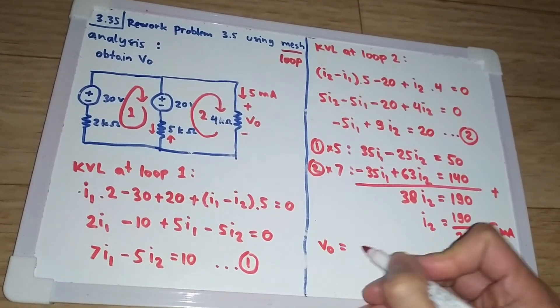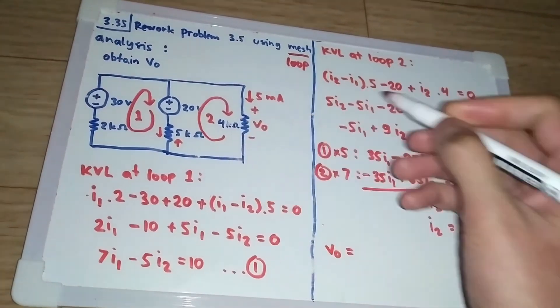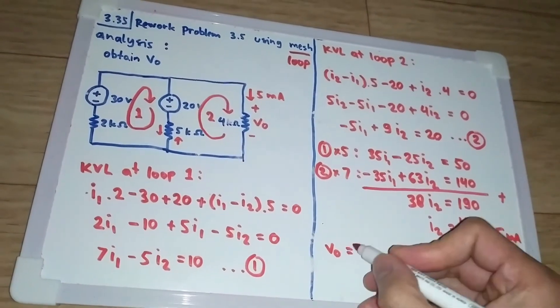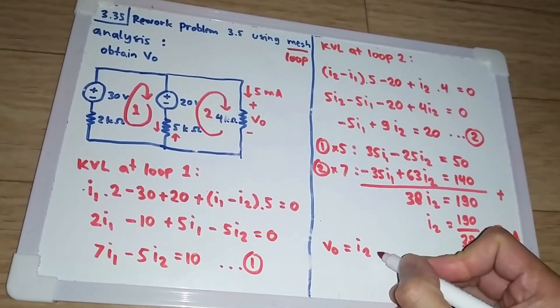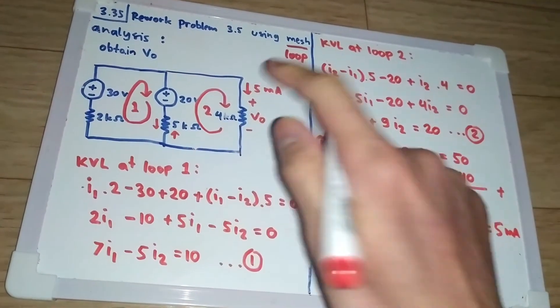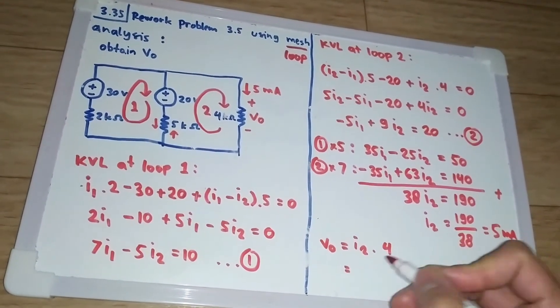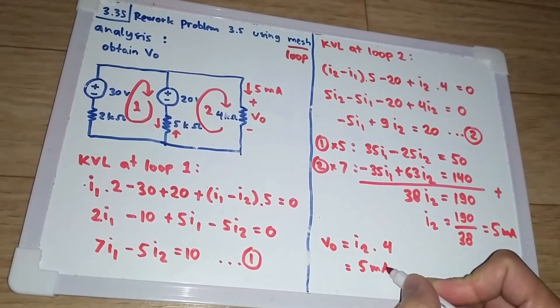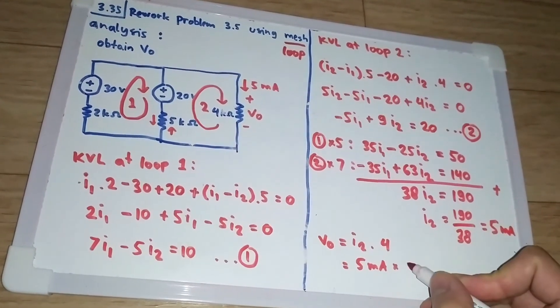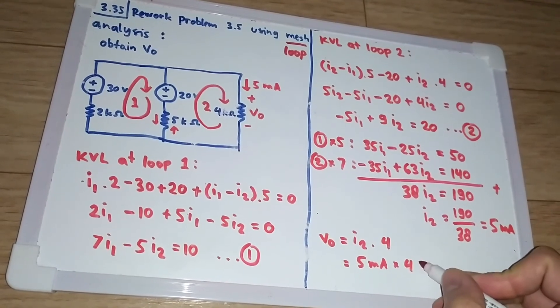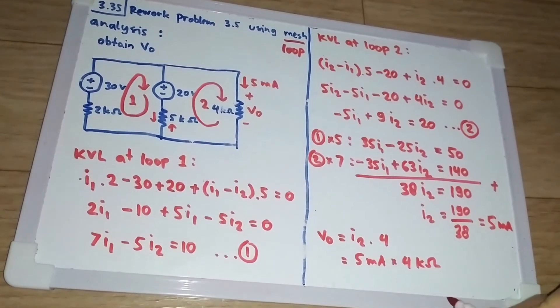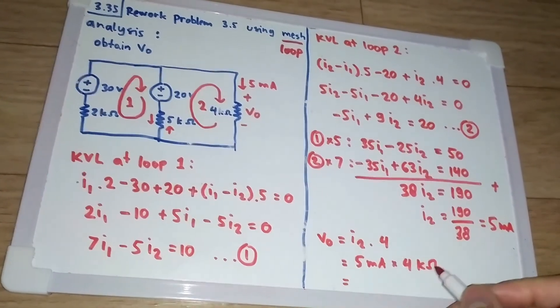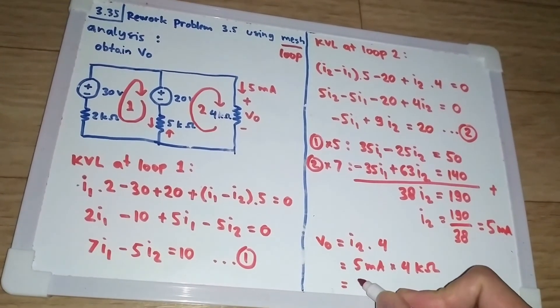But v0 can easily be calculated using Ohm's law. This current I2 times the resistance 4, so I2 is 5 milliamps times 4 ohms, 4 kilo ohms. So we got that v0 is 5 times 4 is 20 volts.